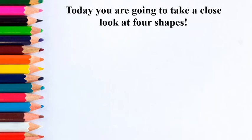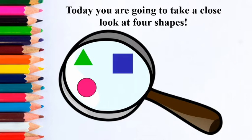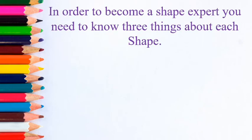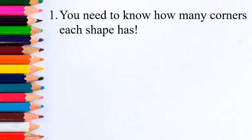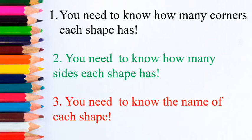Today you are going to take a close look at four shapes: a triangle, a circle, a square, and a rectangle. Today you are going to become a shape expert. In order to become a shape expert, you need to know three things about each shape: how many corners it has, how many sides it has, and the name of each shape.